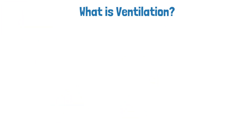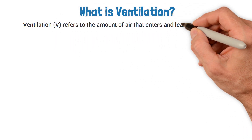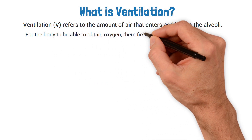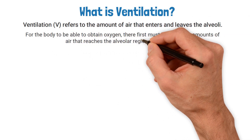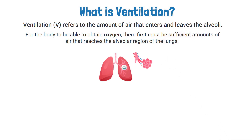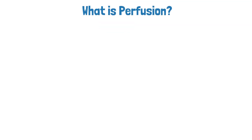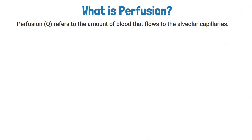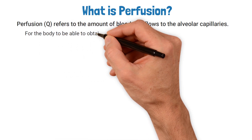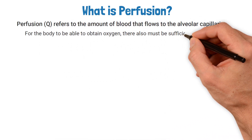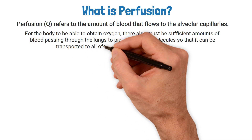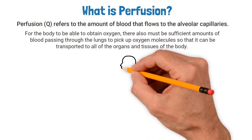Ventilation refers to the amount of air that enters and leaves the alveoli. For the body to obtain oxygen, there must be sufficient amounts of air that reach the alveolar region of the lungs. Perfusion refers to the amount of blood that flows to the alveolar capillaries. There must also be sufficient amounts of blood passing through the lungs to pick up oxygen molecules so it can be transported to all organs and tissues of the body.